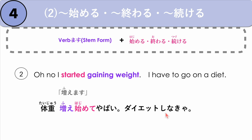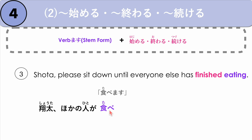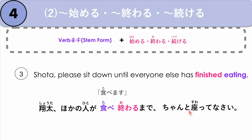Next example: Shota, please sit down until everyone else has finished eating. We have finished eating: we say Shota, hoka no hito ga — our verb is to eat: tabemasu, stem tabe — and then we follow it by to finish eating. Finish is owaru: tabe owaru. Until everyone else has finished eating, so made. Shota, hoka no hito ga tabe owaru made. Please sit down: chanto suwate nasai. Shota, hoka no hito ga tabe owaru made, chanto suwate nasai. The mother is talking to her son.